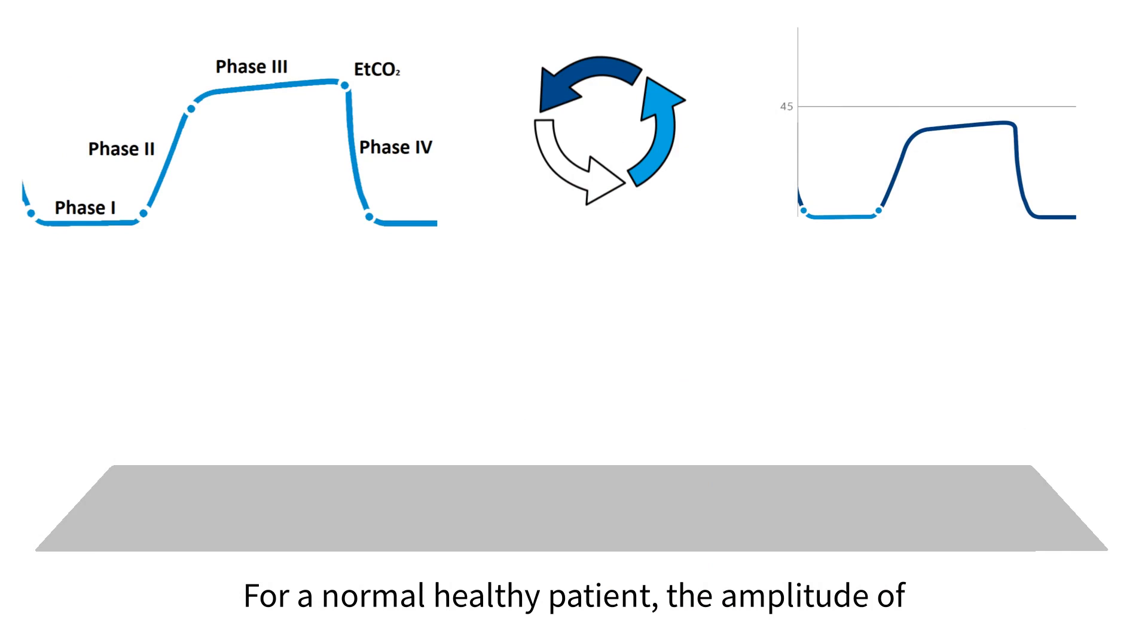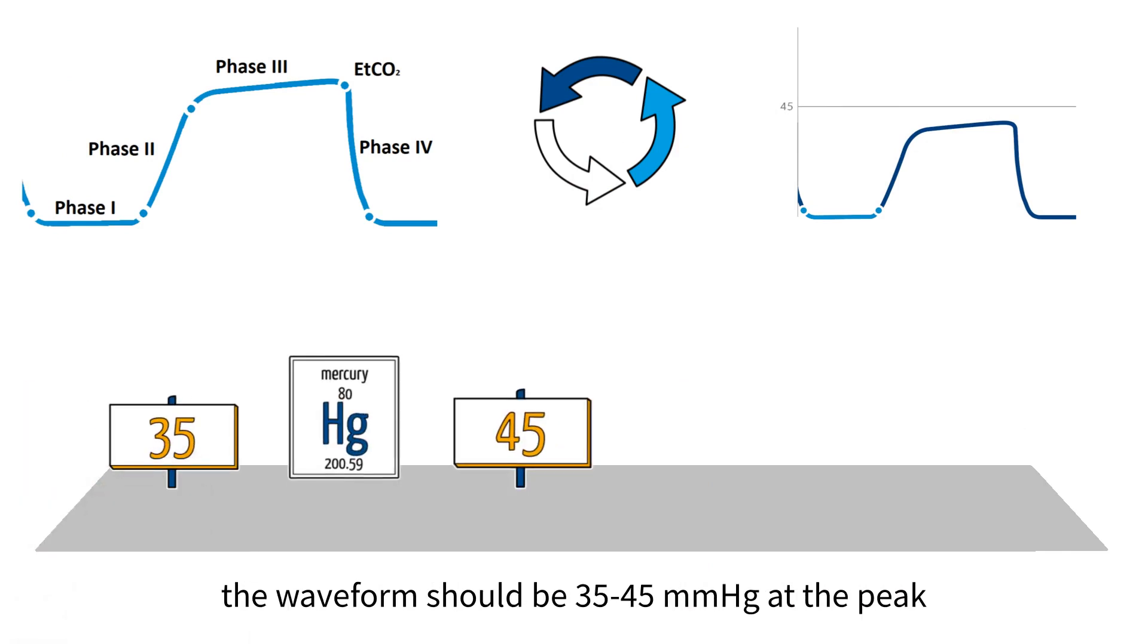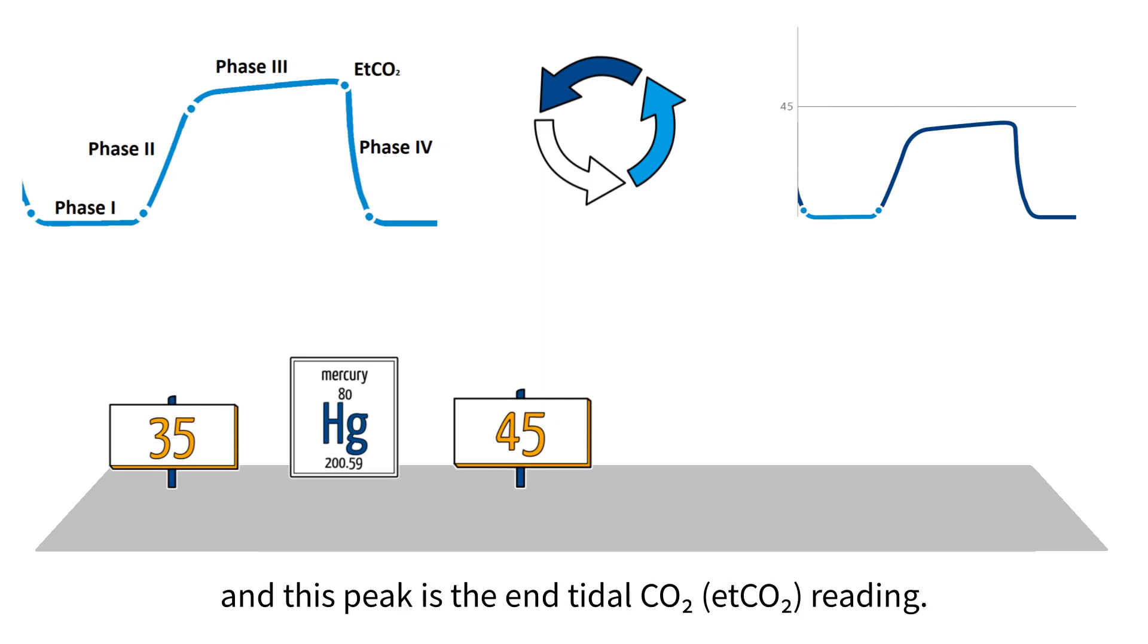For a normal healthy patient, the amplitude of the waveform should be 35 to 45 millimeters of mercury at the peak, and this peak is the end tidal CO2 reading.